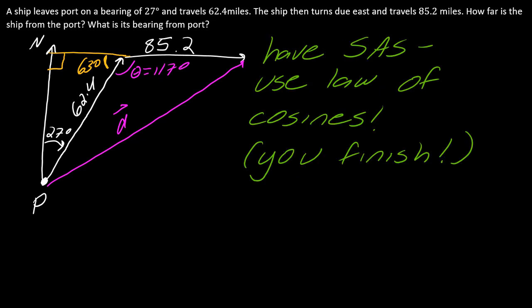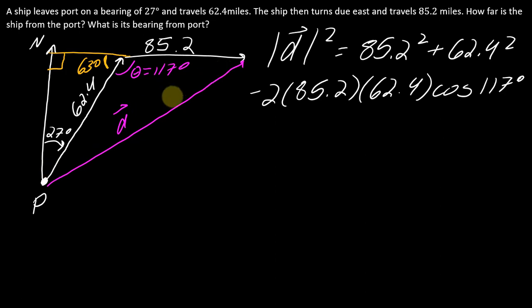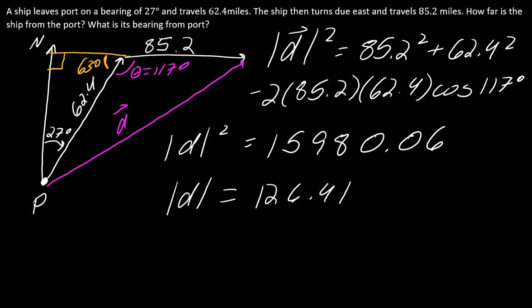Okay, now. The next thing, we want to figure out this distance here, really the magnitude. So, notice I have a side, an angle, and a side, so I can use the law of cosines. So I think you should be able to figure this out, because we've talked about the law of cosines in a lot of other videos. I'd say pause, finish, hit play when you're ready. All right, so to get the magnitude of this, I take 85.2 squared, 62.4 squared, minus all of this. And so then it's just really just plug and chug. So I get that D is going to be equal to 126.41, and that's miles.